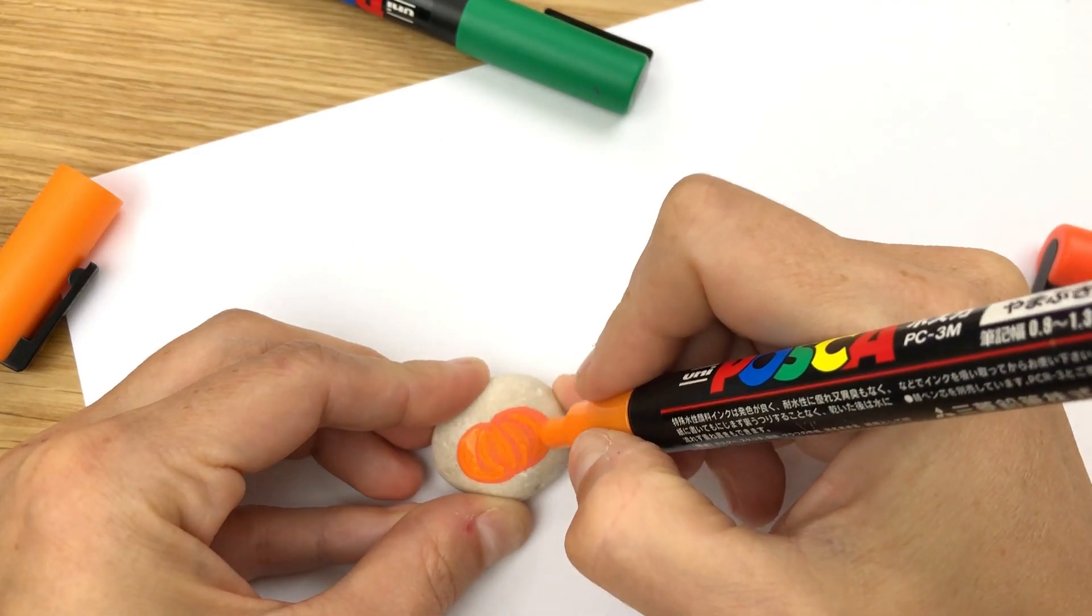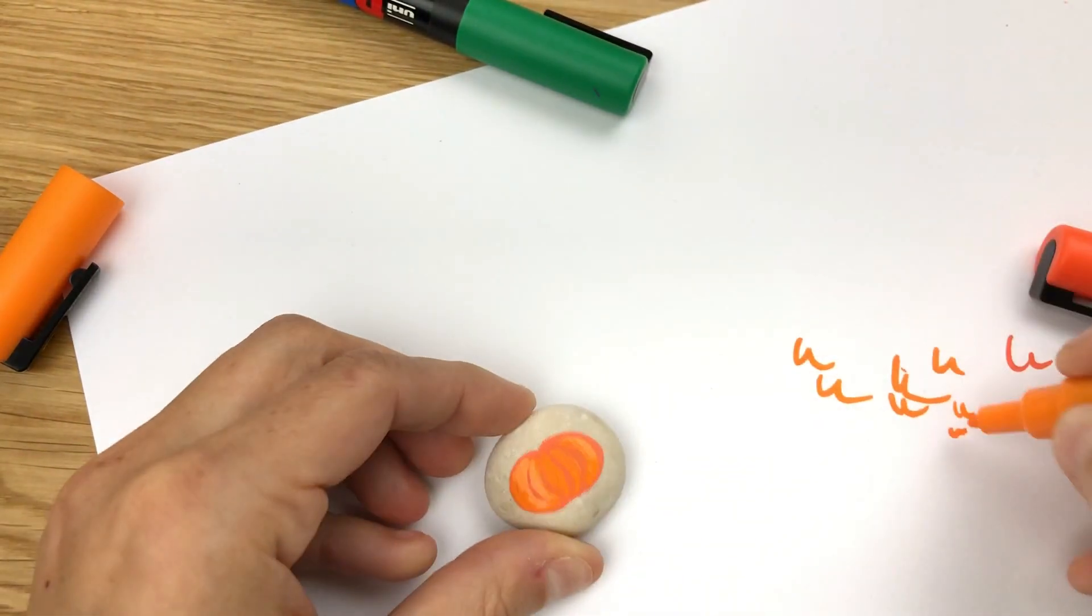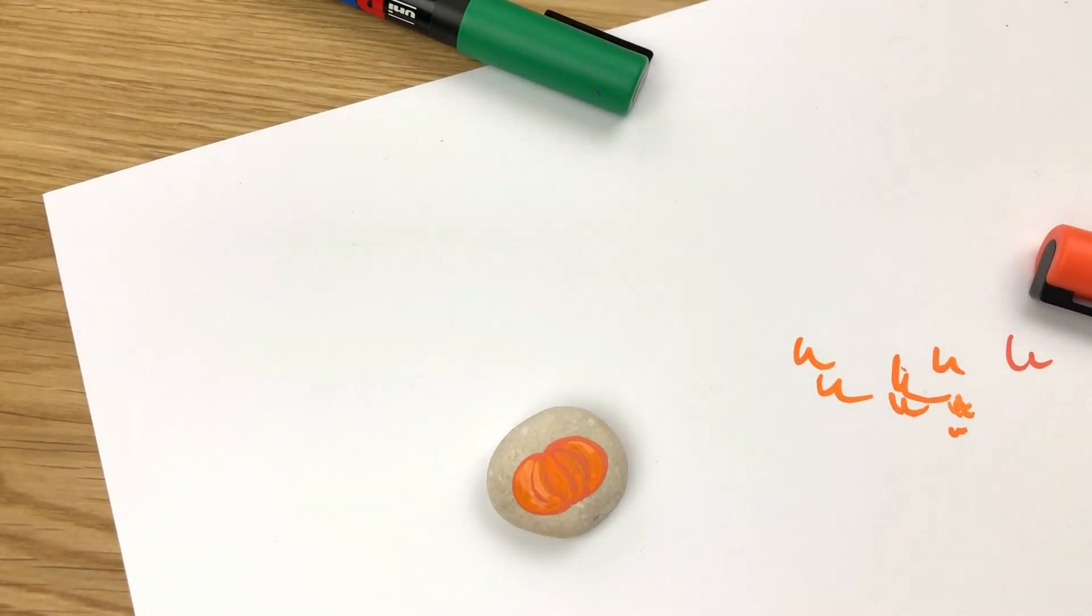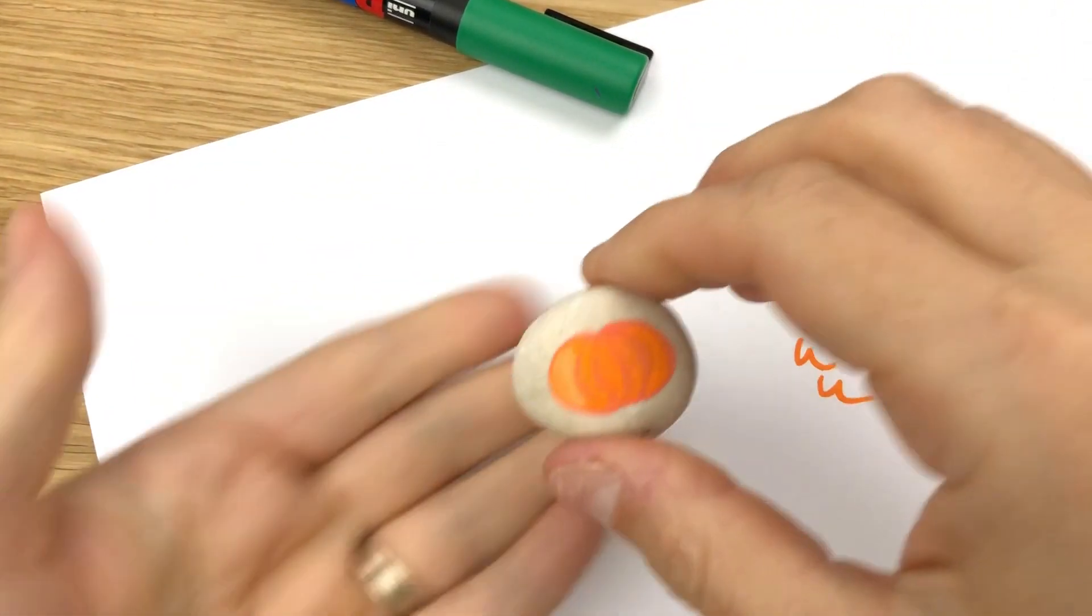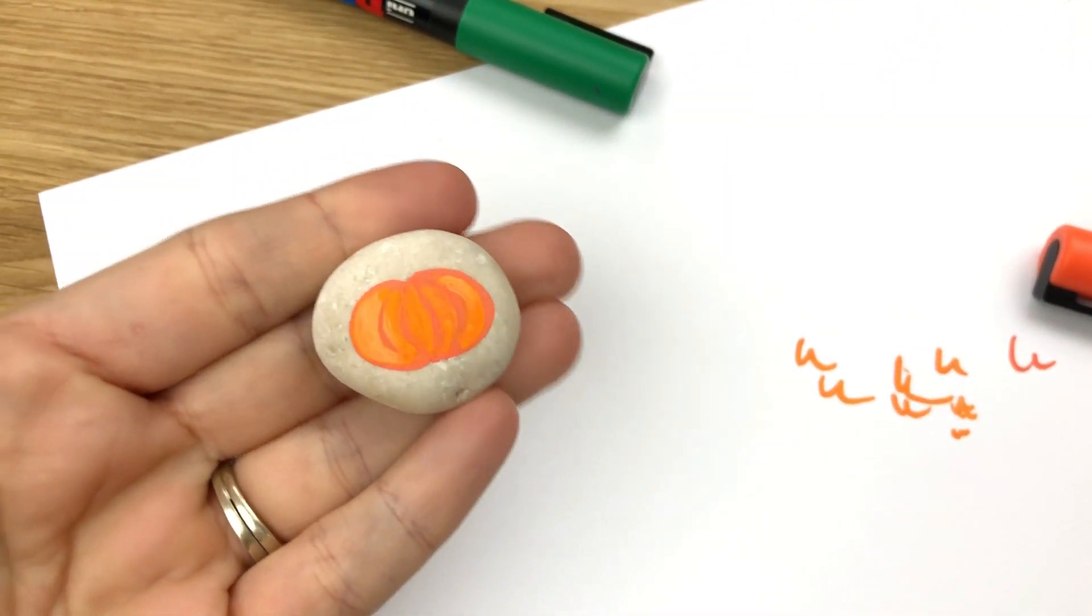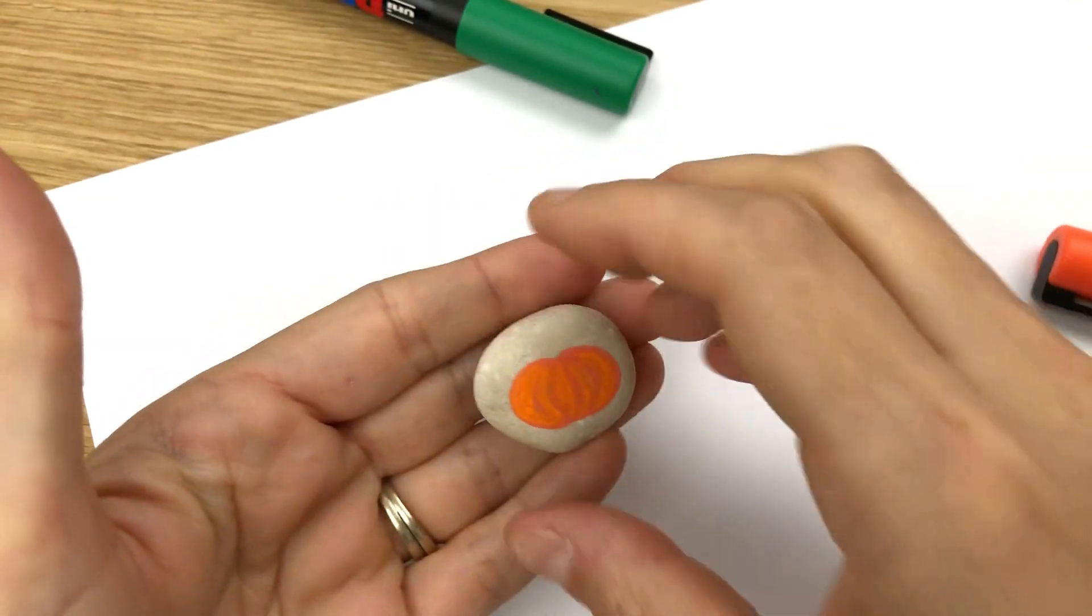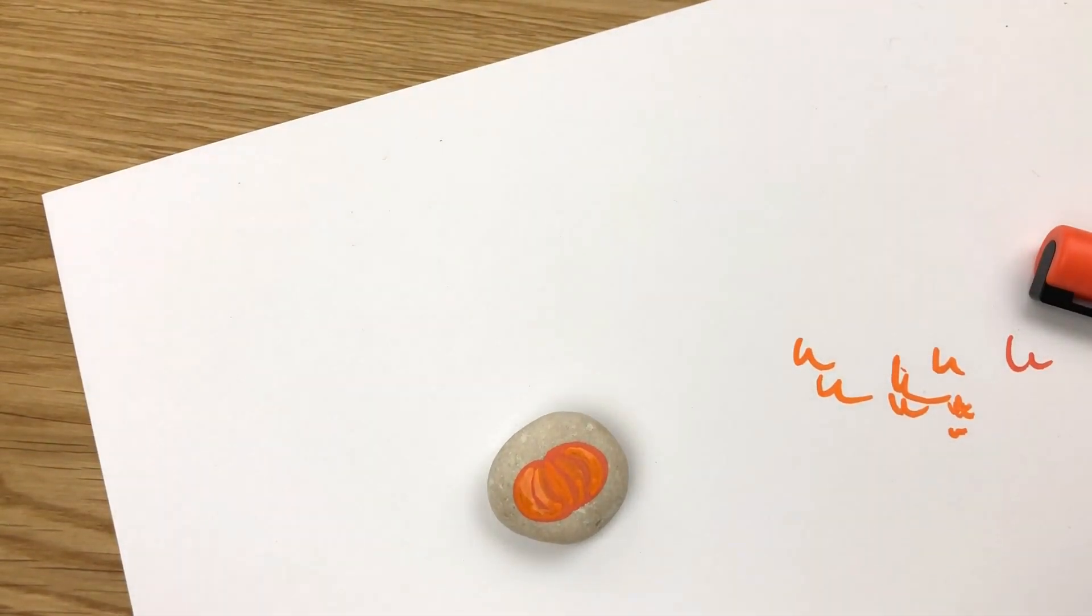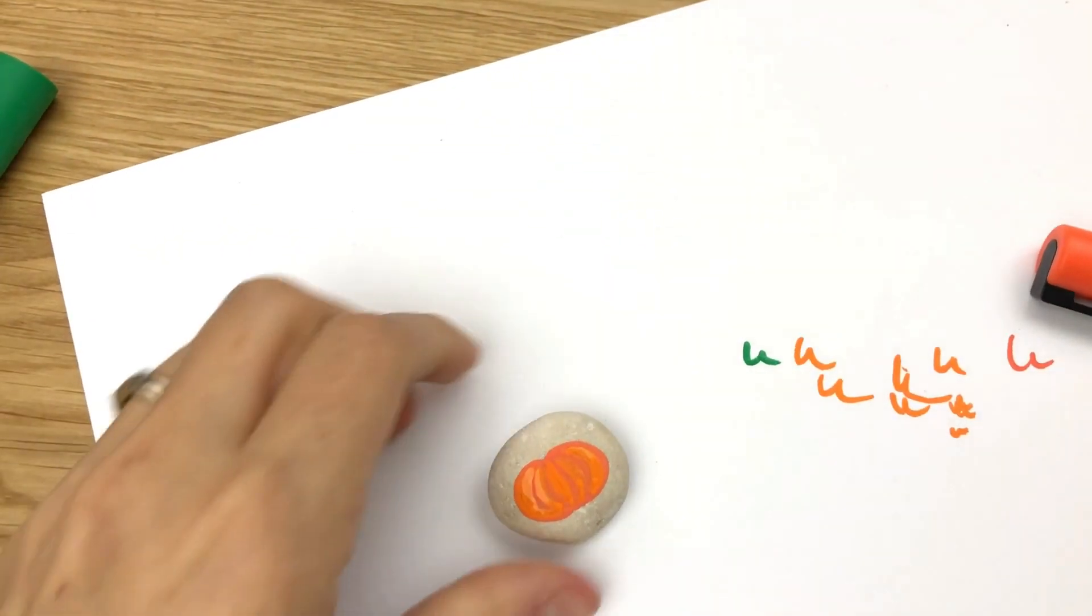I'm gonna let that layer dry a little bit. I might come in with more orange, we'll see how it looks when it's dry. So that's our basic pumpkin part, it's just that simple really.